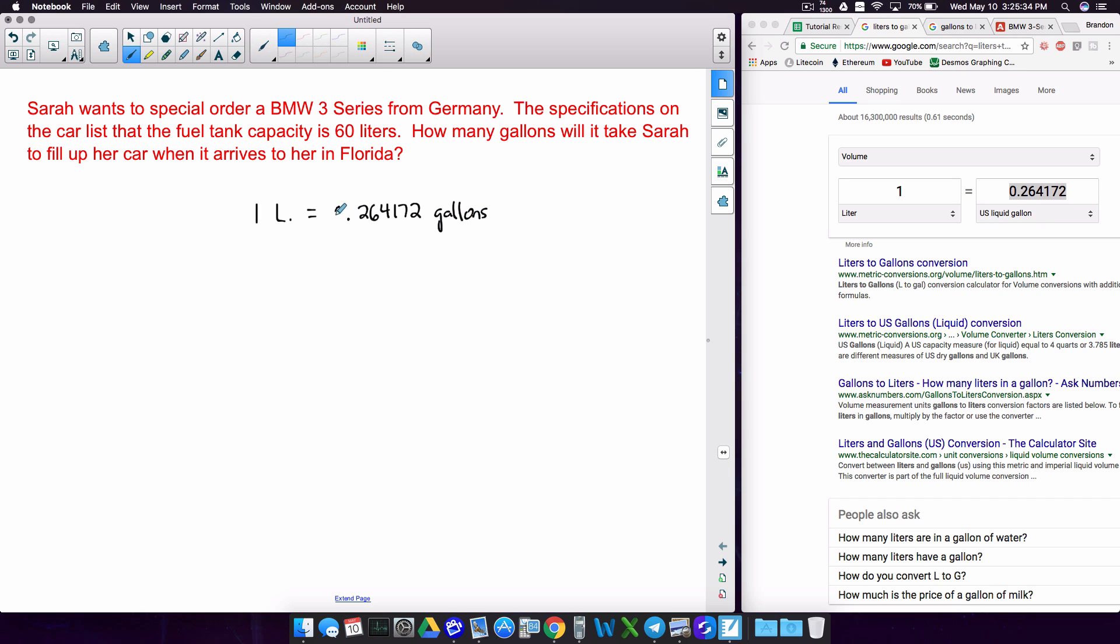I'm going to put my little zero there so we don't overlook that decimal. And then at our bottom pieces, since I have set up this proportion as one liter equals this many gallons, we know that Sarah's car has 60 liters. But what we don't know is how many gallons it's going to be. So x gallons.